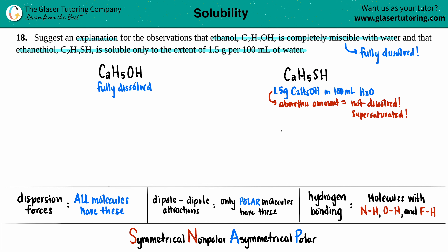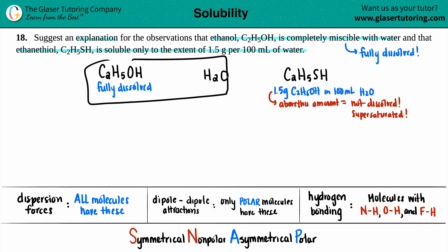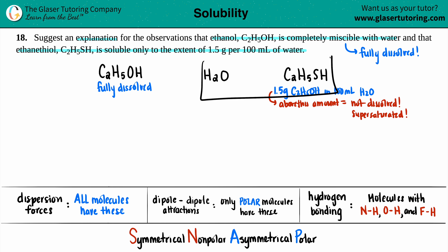Now, where does this limit come from and why? We have to give an explanation. Both compounds are being dissolved in water, so to truly understand this question, we need to think about what types of intermolecular attractions are going on between the alcohols and H2O, and between H2O and ethane thiol. We should list out all of the intermolecular forces these molecules have.